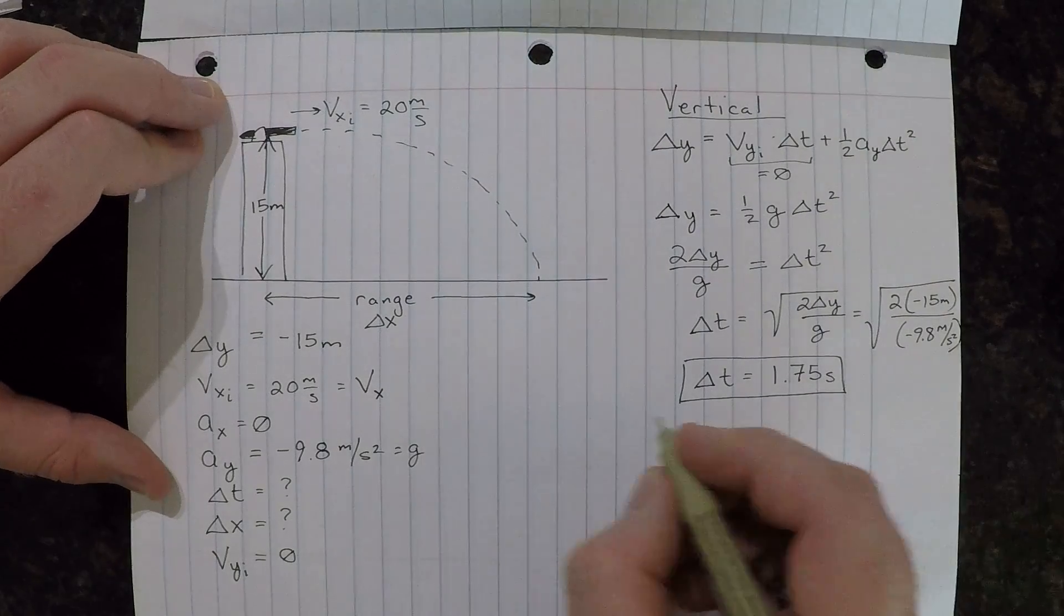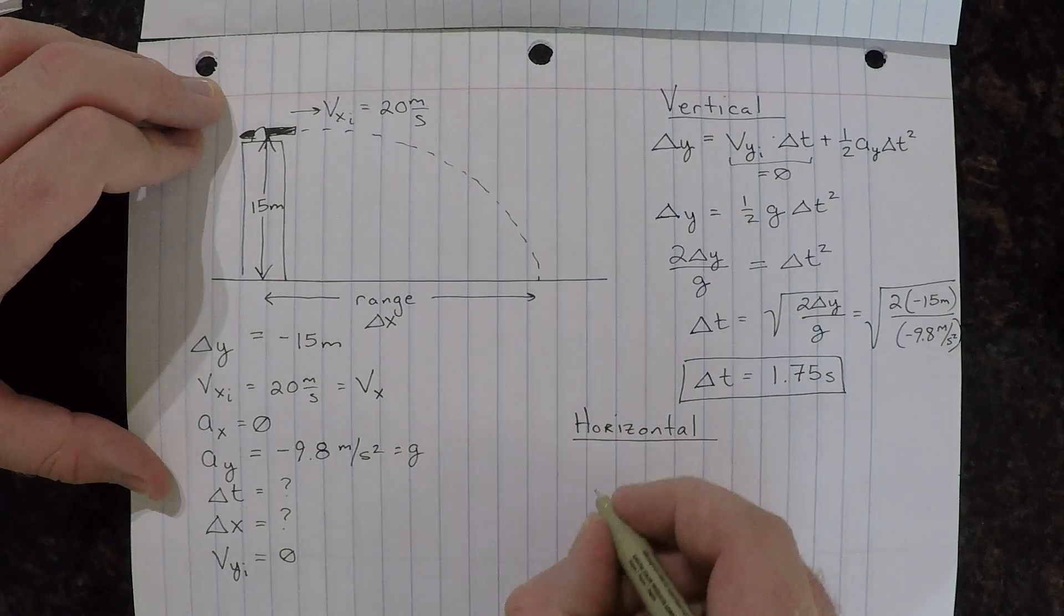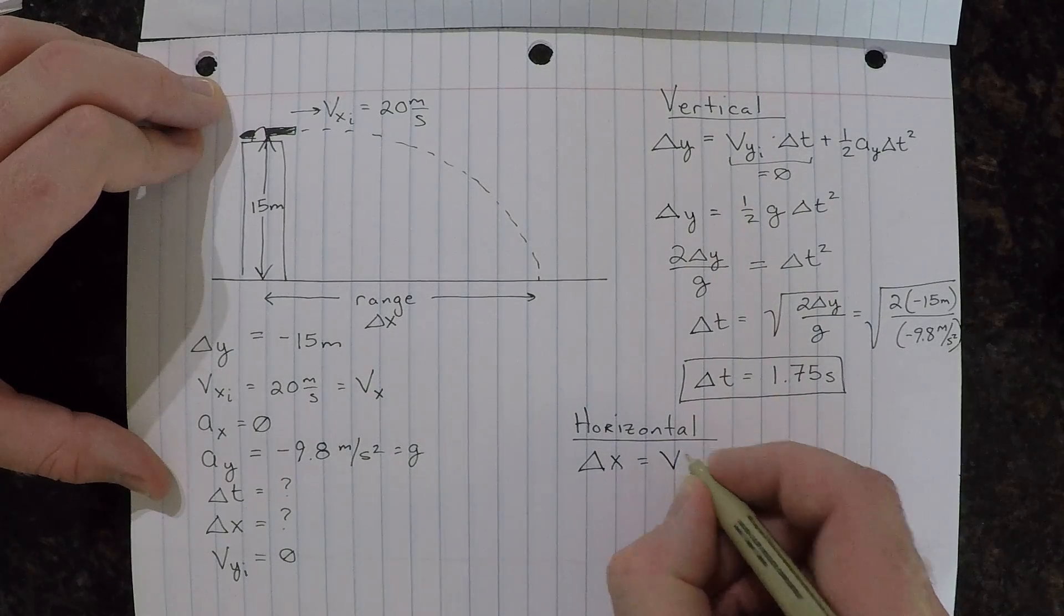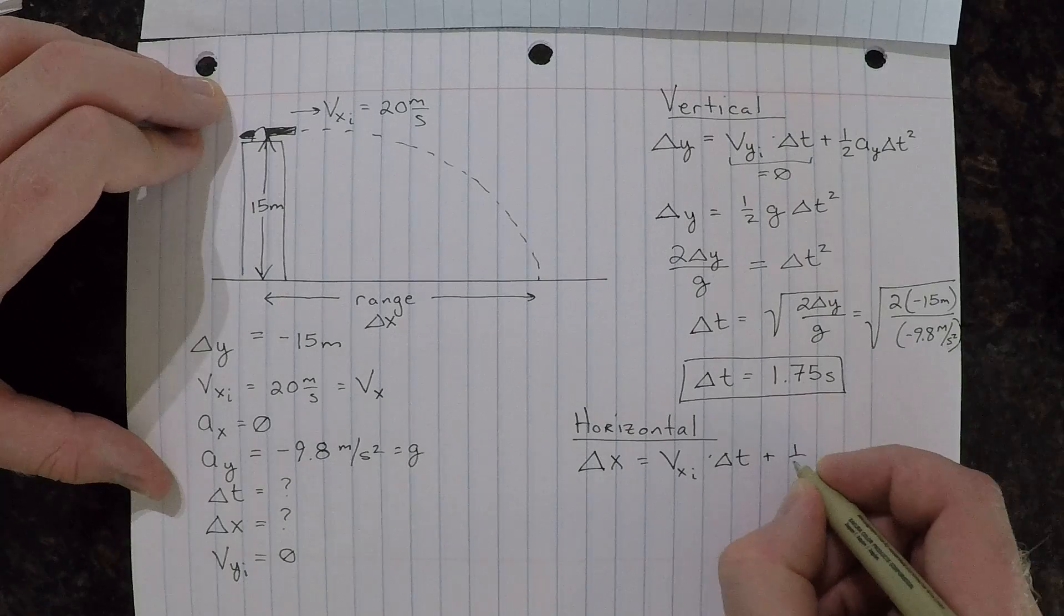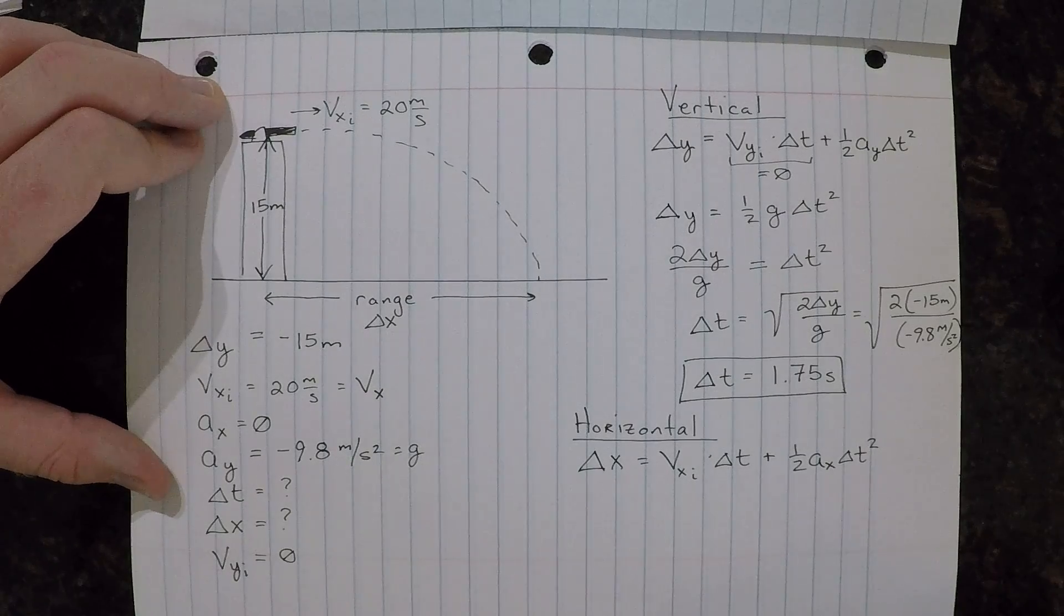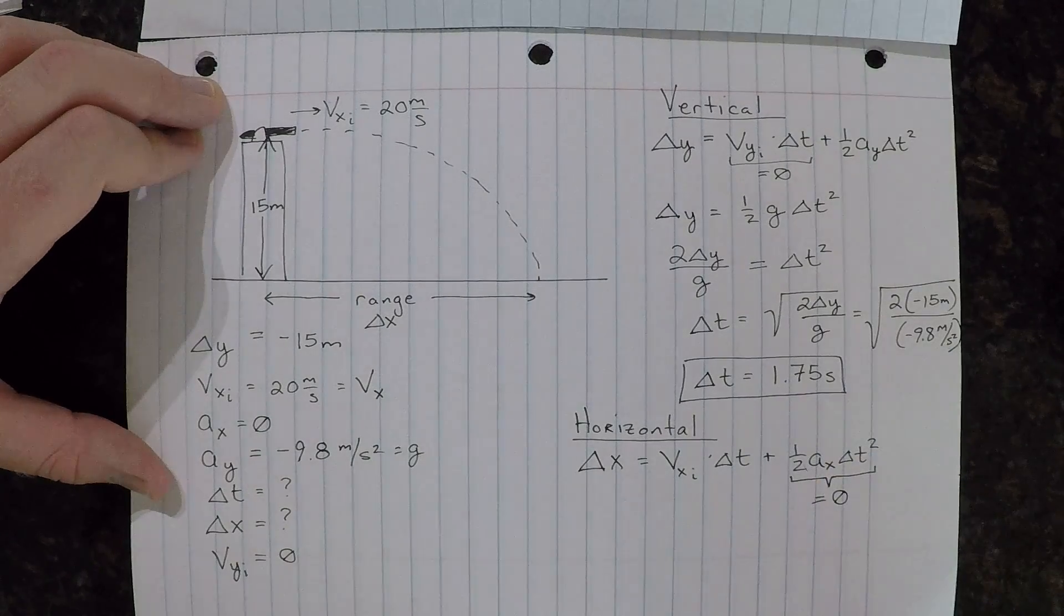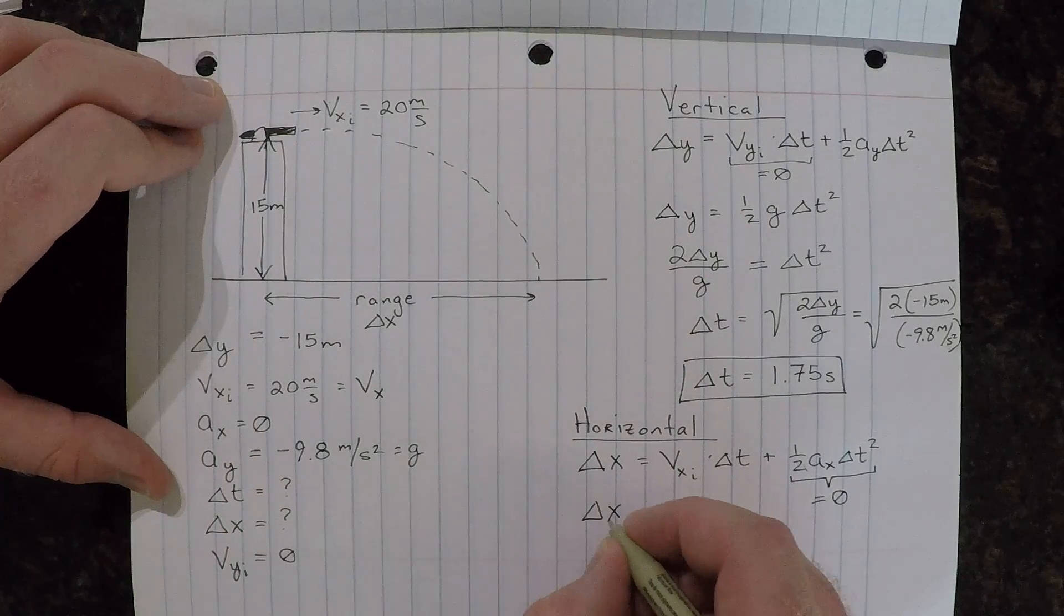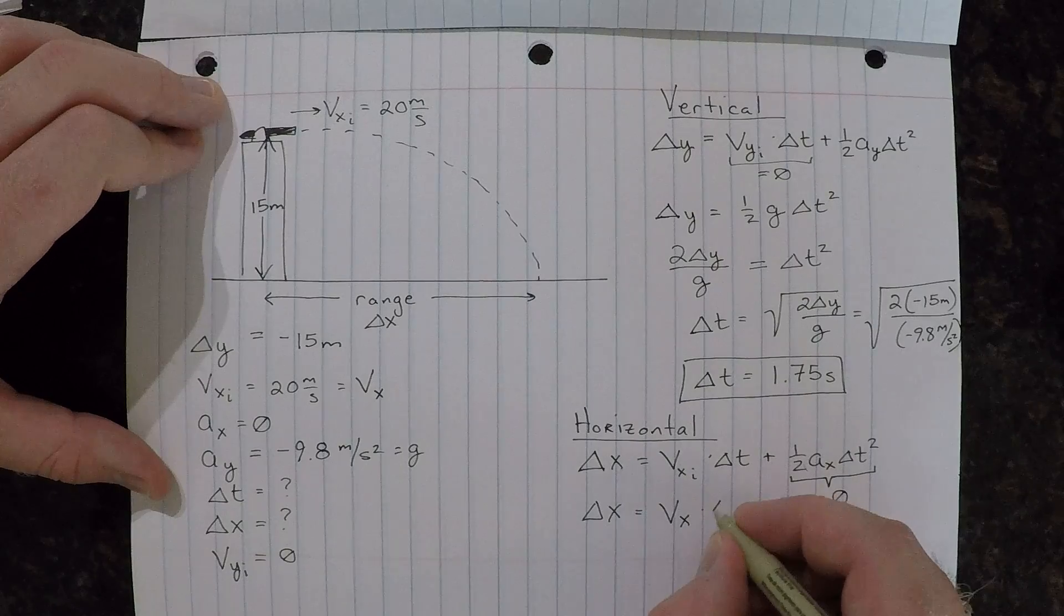Now we need to go to the horizontal direction. In horizontal, we just say delta x. We use the same equation just for x now. V x initial times delta t plus one-half a in the x direction delta t squared. We can simplify this even more. We can say, well, this second term here is equal to zero because the acceleration in the x direction is zero. And we're just left with the first term in the equation. So delta x is equal to v x, remember we said that was just one single number, times delta t.